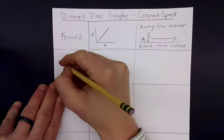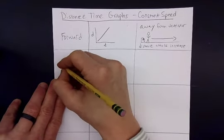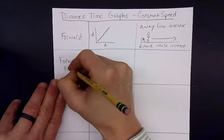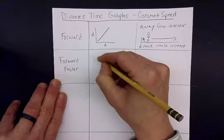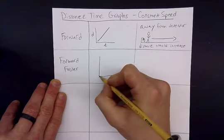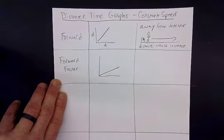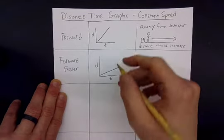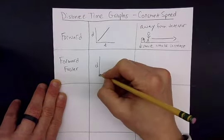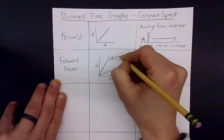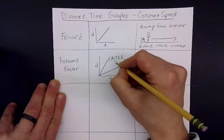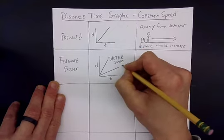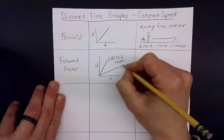Now if we go forward faster, let's compare. This would be forward, right? But how would we draw the person moving faster? If they were moving like this, that would be faster, because it would be steeper. And this would be also forward, but it would be slower.